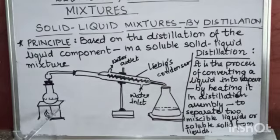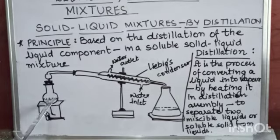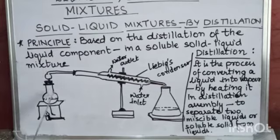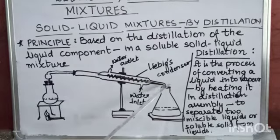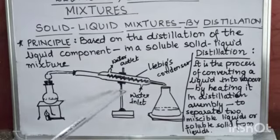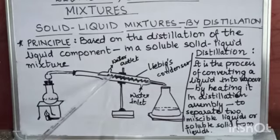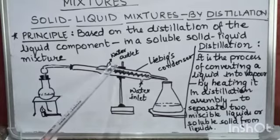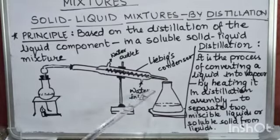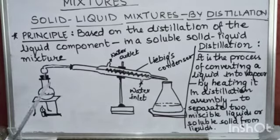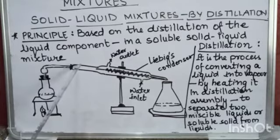On heating, the solid impurities in water remain behind in the distillation flask, and the liquid water changes into vapor form. The vapor then goes through a tube to the condenser. The condenser is used to condense vapors. There is a water outlet and water inlet which is used to cool down the condenser. On heating, the vapors travel through the tube and go to the condenser.